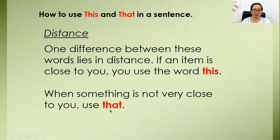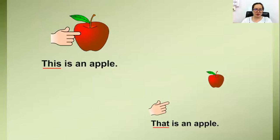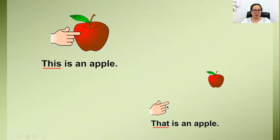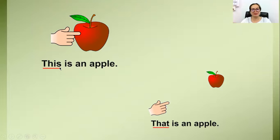I will give you some examples. 'This is an apple' — so look at the apple. The apple is very near, so that's why it uses 'this.' 'That is an apple' — look at the distance between pointing the finger and the apple. Use 'this' if the item is very close or you are holding it, and 'that' if the item is far or not close to you.